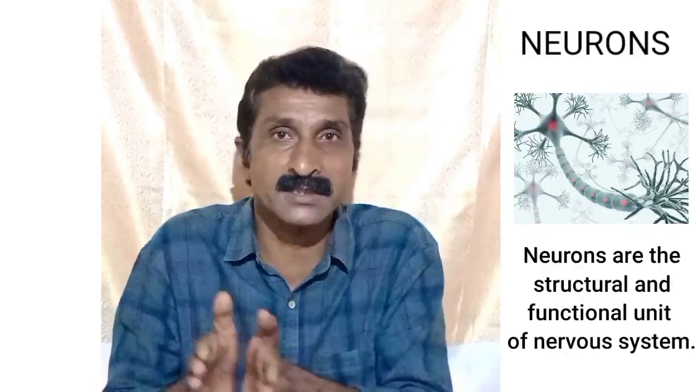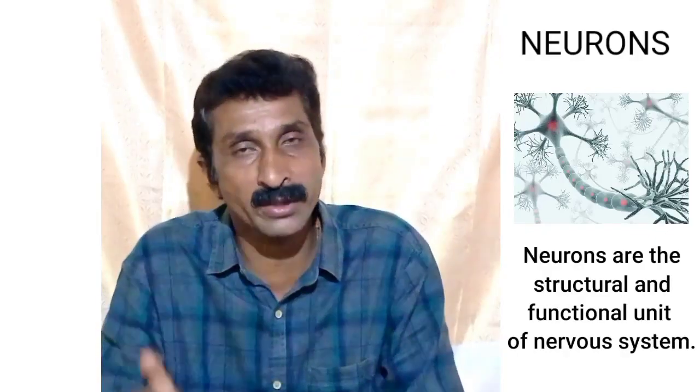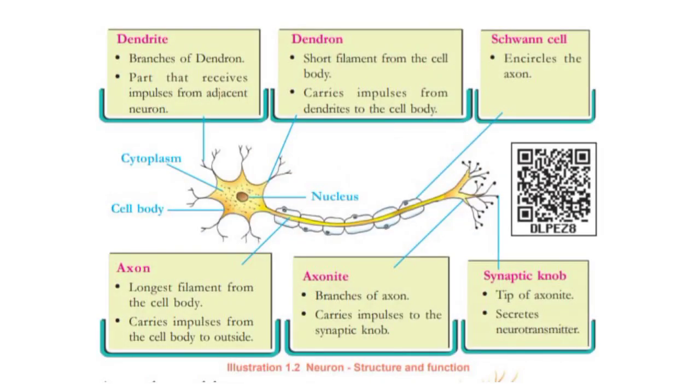The nervous system is made up of specialized cells called as nerve cells. Nerve cells are called as neurons. Neurons are the structural and functional unit of the nervous system. Now we are going to learn about the structure of a neuron or nerve cell. A nerve cell is like that of a kite, and it consists of mainly six parts.